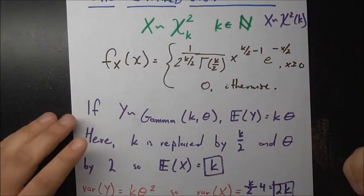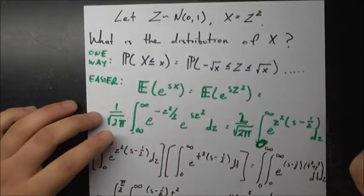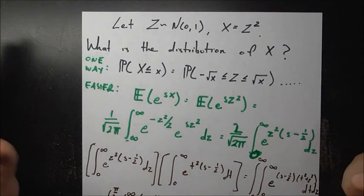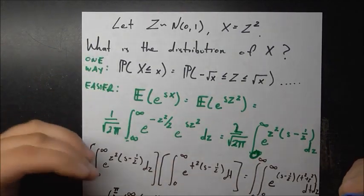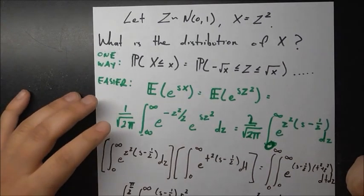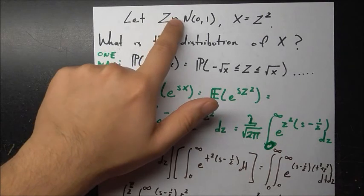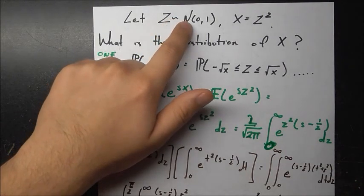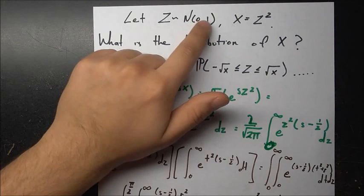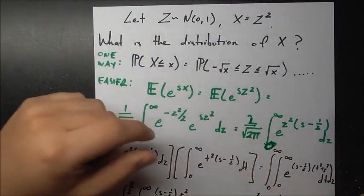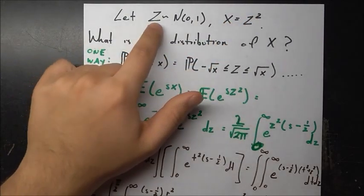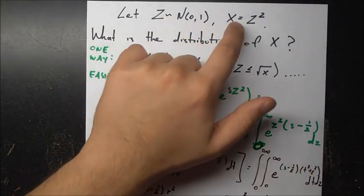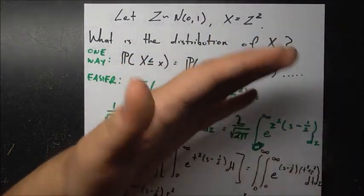Now let's talk about the relationship between the normal distribution and the chi-squared distribution. We let z be distributed as normal with mean 0 and variance 1, and we define a new random variable x = z². The question is: what is the distribution of x?